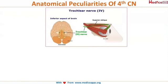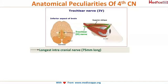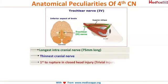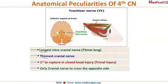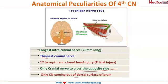There are important peculiarities about the fourth cranial nerve frequently asked in exams. It is the longest intracranial nerve with a course of 75 mm (7.5 cm), and the thinnest — making it the first to rupture in any closed head injury, even trivial ones. It is the only cranial nerve to cross to the opposite side, meaning the left fourth nerve supplies the superior oblique of the right side. It is also the only cranial nerve arising from the dorsal surface, whereas all others come from the ventral surface.